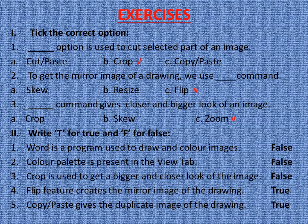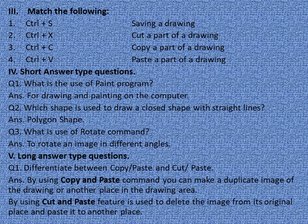Question 2: Write True or False. Word is a program used to draw and color images — False. Color palette is present in the View tab — False. Crop is used to get a bigger and closer look of an image — False. Flip feature creates the mirror image of the drawing — True. Copy Paste gives the duplicate image of the drawing — True. Question 3: Match the following. Ctrl+S means saving a drawing. Ctrl+X means cut a part of a drawing. Ctrl+C means copy a part of a drawing. Ctrl+V means paste a part of a drawing.